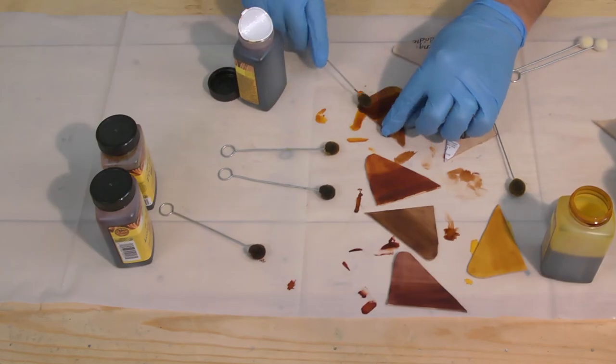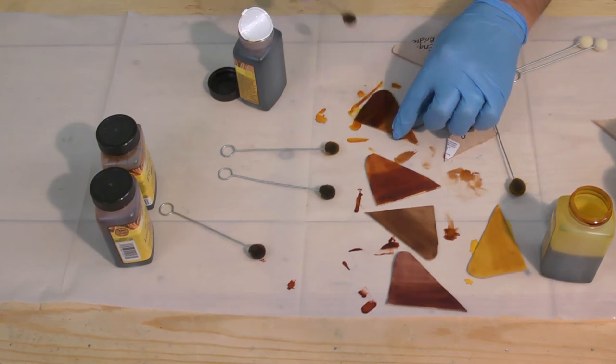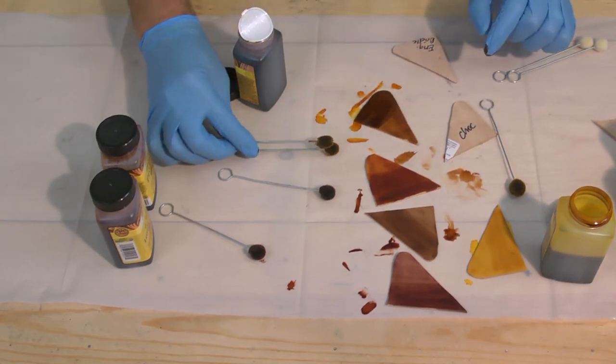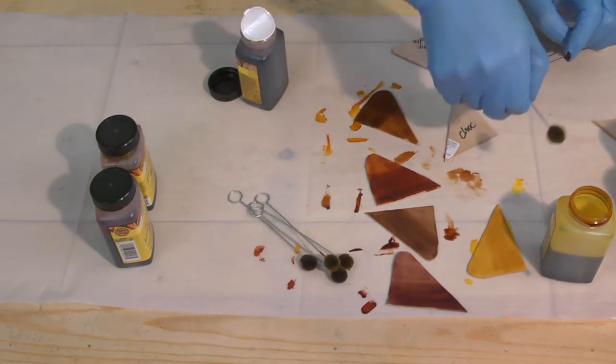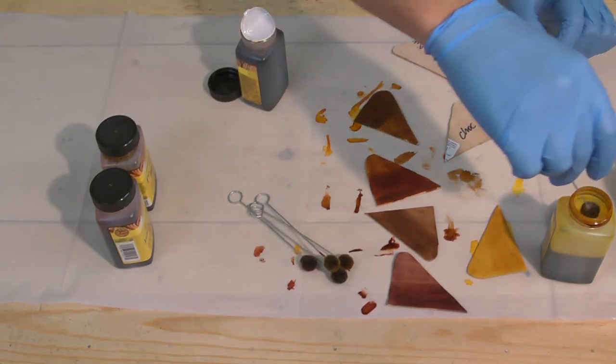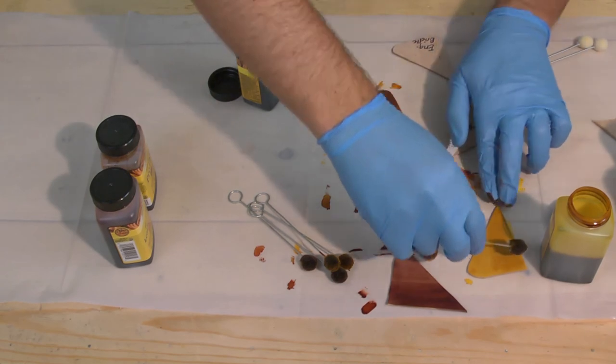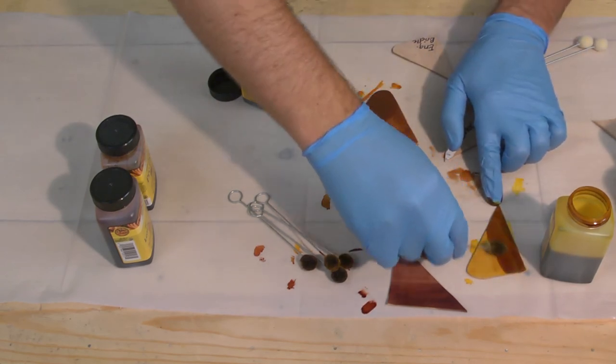All right, so we're going to put another, a second layer here. See if it turns a lot darker. Not really, maybe a little. And a second coat of the yellow here. See if it gets a lot darker.